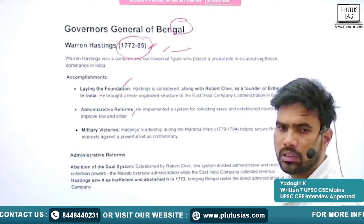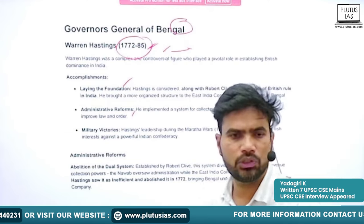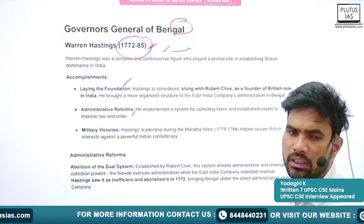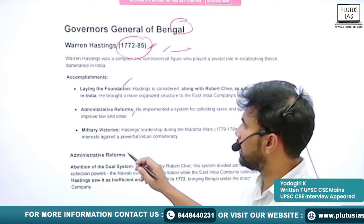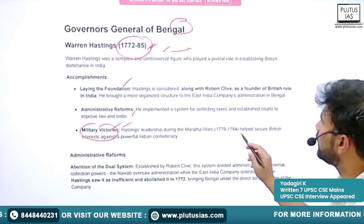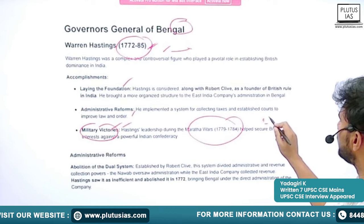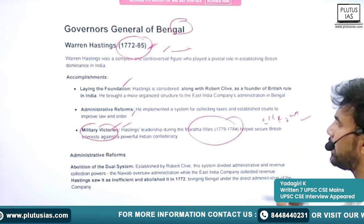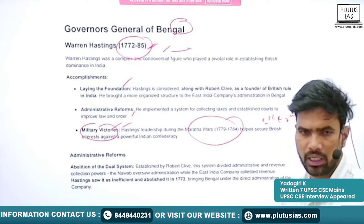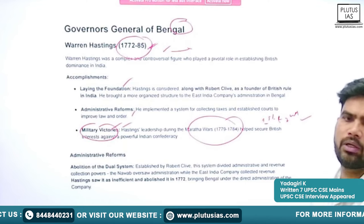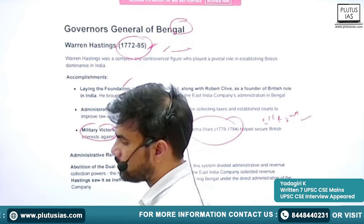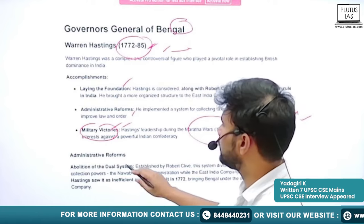Warren Hastings took many administrative reforms — reforms in civil services, judiciary, and revenue collection. He was also involved in wars with native rulers and achieved some success, especially during the Maratha wars. In the first and second Maratha wars he played a decisive role, and the East India Company could see victory because of his prominent role. Among his administrative reforms, he abolished the dual system.